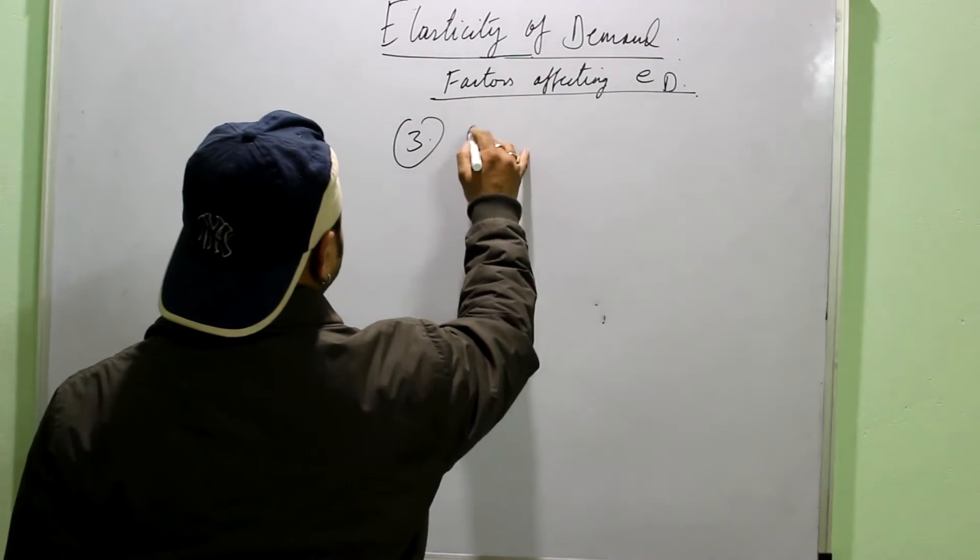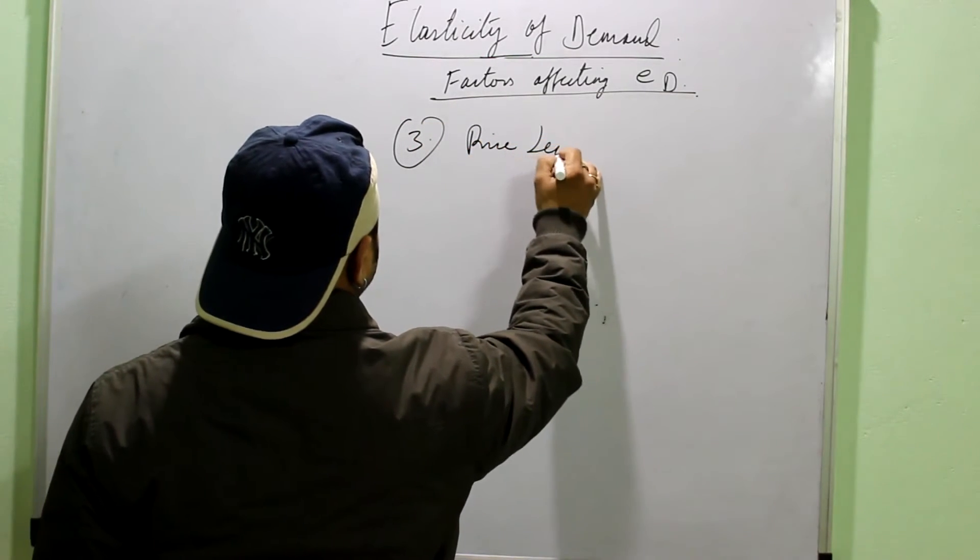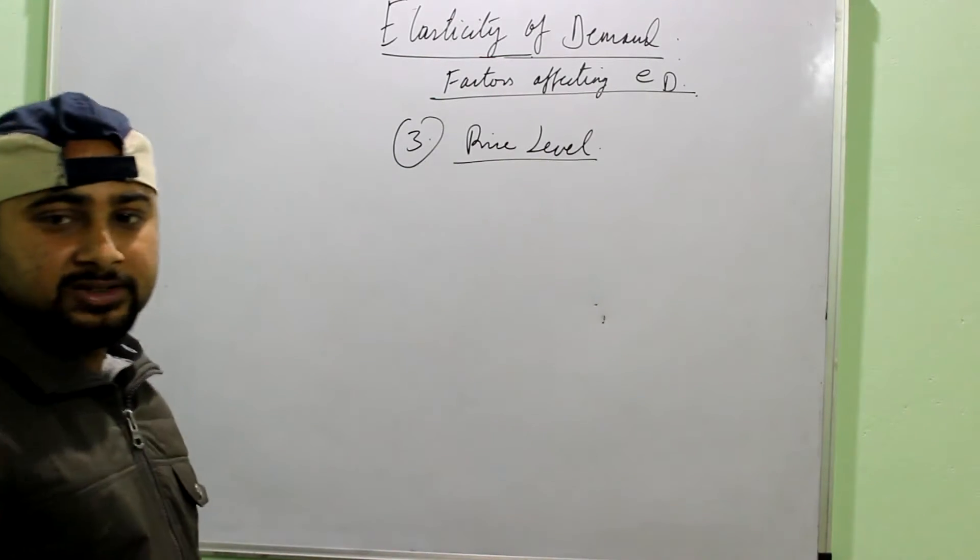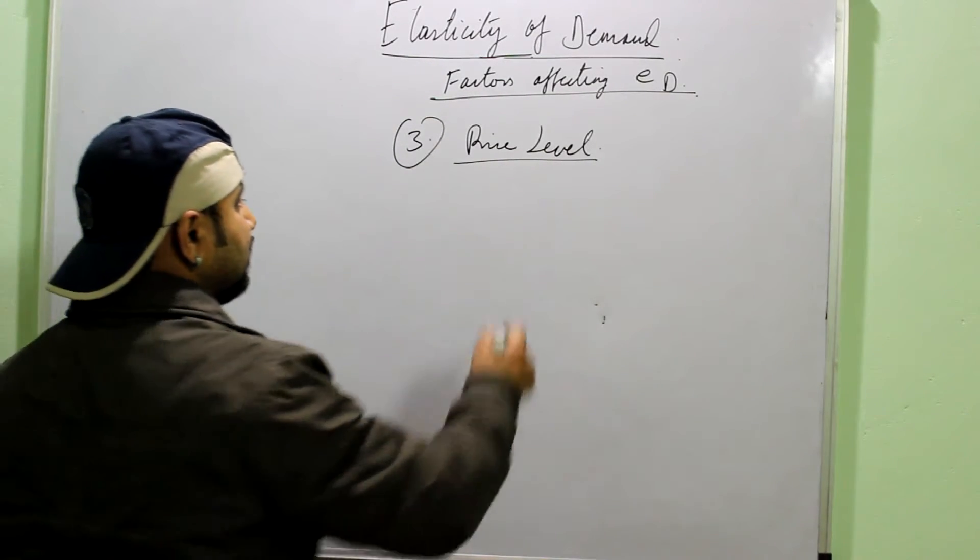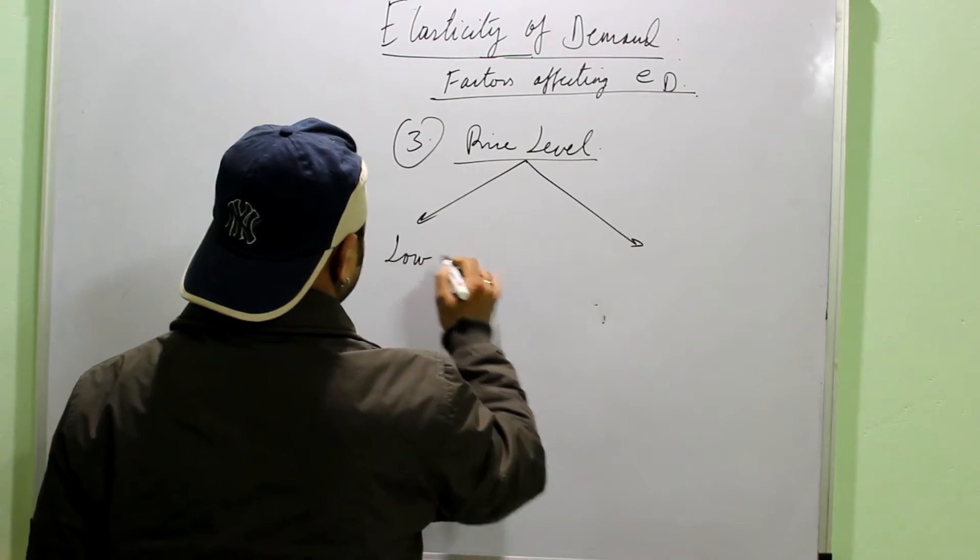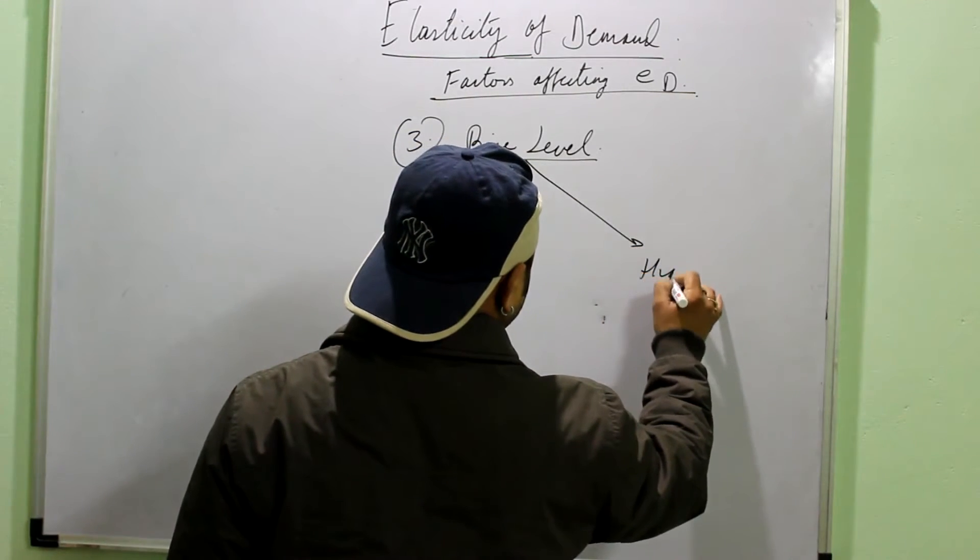The third factor is the price level. That means to which price level does the commodity belong. You can again categorize it into two segments. Low price level and high price level.